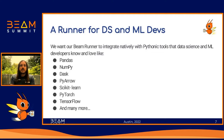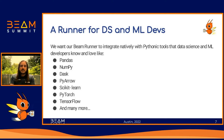Now that we know why we chose to work with Beam, let's talk about what it means to create a Beam runner for data science and ML developers. Whatever runner we build should integrate natively with the Pythonic tools that data science and ML developers already know and love. This means we want them to be able to seamlessly integrate their Beam pipelines with data science tools like Pandas, NumPy, Dask, and PyArrow, and with common ML libraries like scikit-learn, PyTorch, and TensorFlow.